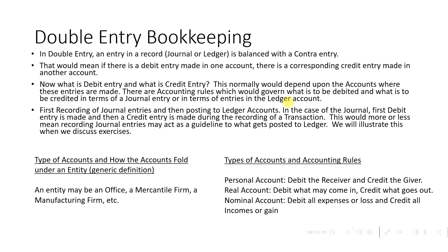The meaning of a debit or credit entry is dependent upon the accounting rule for a particular account. Accounts are basically of three types: personal, real, or nominal. For a personal account, we debit the receiver and credit the giver. For a real account, we debit what comes in and credit what goes out. For a nominal account, we debit all expenses or losses and credit all incomes and gains.